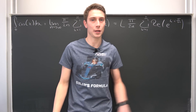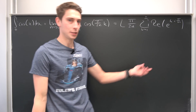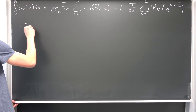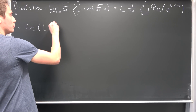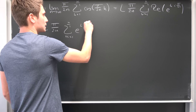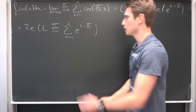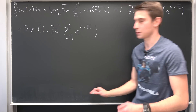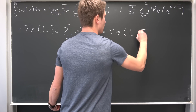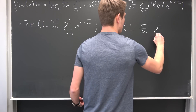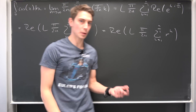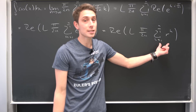We can rewrite this as nothing but the limit of pi over 2n times the sum running from k equals 1 to n, of the real part of e to the k times i times pi over 2n. The real part is a linear real operator, meaning we can just bring the real part completely to the outside. Then rewriting this, I would like to refer to e to the i times pi over 2n as just r.